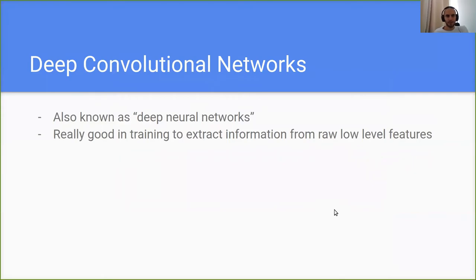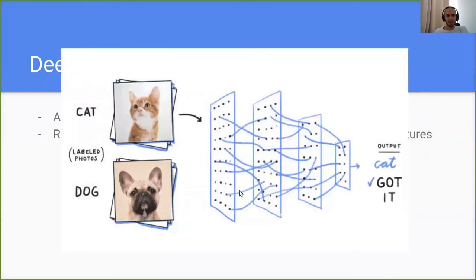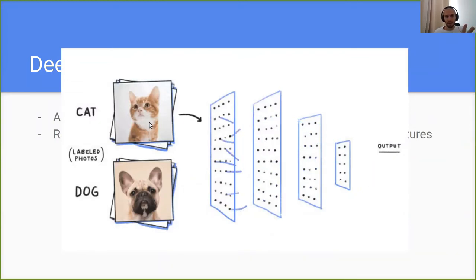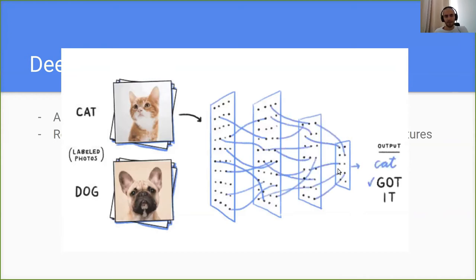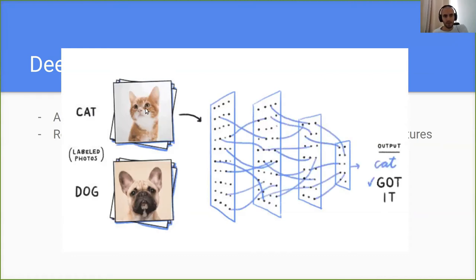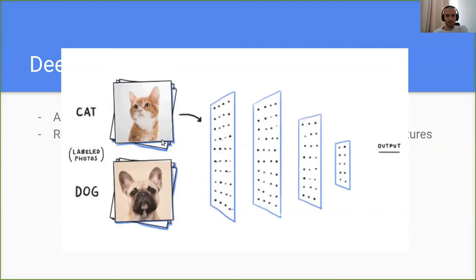We're talking about deep convolutional networks, also known as deep neural networks. Their great advantage is the ability to extract information from low-level features. For example, in the cat and dog example, a neural network just takes the cat image as input and extracts by itself what it needs to make the final decision — whether it's a cat or a dog — instead of me telling the network about sharp ears or the distance between the nose and eyes. The network takes the raw input and makes the decision by itself.